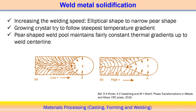If we increase the welding speed, the shape changes from elliptical to a narrow teardrop shape. As the welding speed increases, the crystal growth occurs following the steepest temperature gradient. The columnar growth follows this direction, which is normal to the pool boundary, because at this point the steepest temperature gradient exists. At very high speed, it takes this perpendicular shape and finally takes a single direction.